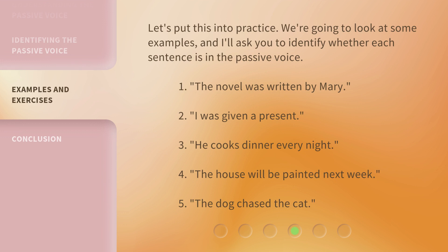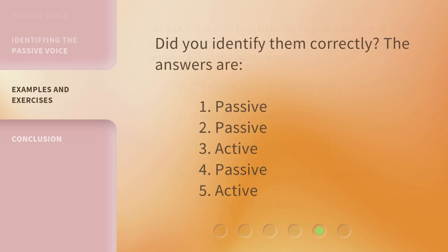Let's put this into practice. We're going to look at some examples, and I'll ask you to identify whether each sentence is in the passive voice. Did you identify them correctly? The answers are: 1 — passive, 2 — passive, 3 — active, 4 — passive, 5 — active.